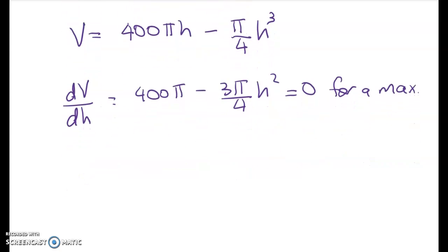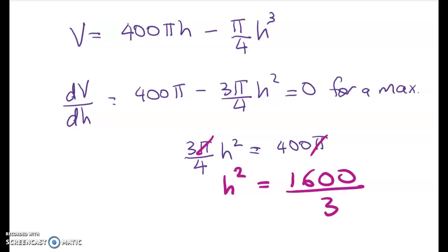So let's rearrange and solve that for H. So 3 quarters of pi H squared is equal to 400 pi. We can divide both sides through by pi. That gives me H squared is equal to 1600 divided by 3.